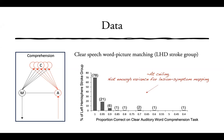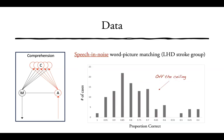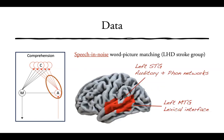For clear speech, word-picture matching performance was basically at ceiling — very few patients, roughly five percent, were in the lower distribution, which is not enough variance for lesion-symptom mapping. However, speech in noise did produce the distribution needed for lesion-symptom mapping. The results show temporal lobe systems, with no evidence of dorsal stream involvement — left STG including auditory and phonological areas, as well as left MTG, which we consider to be the lexical interface, as Hickok and Poeppel and others had proposed.